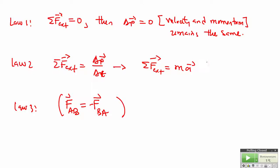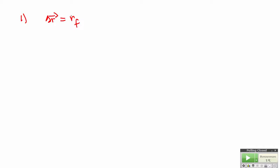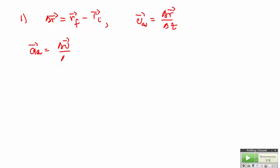We will use these three laws in explaining uniform circular motion. Before we proceed, recall that the displacement of an object, delta R, is just the final position minus the initial position. The average velocity is the displacement divided by time. Similarly, the average acceleration is the change in velocity divided by the change in time. This implies that the direction of acceleration is the same as the direction of the change in velocity — not the same as the direction of velocity itself. Those are two different things.